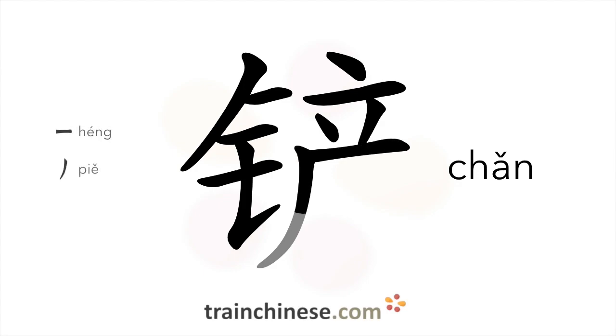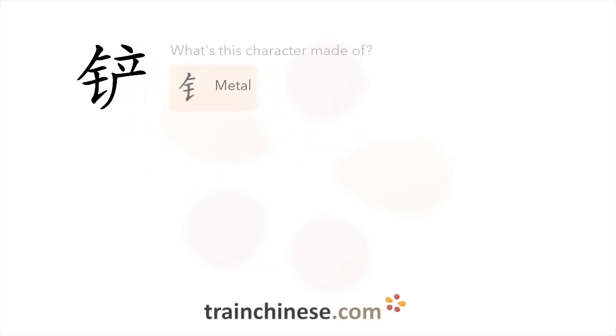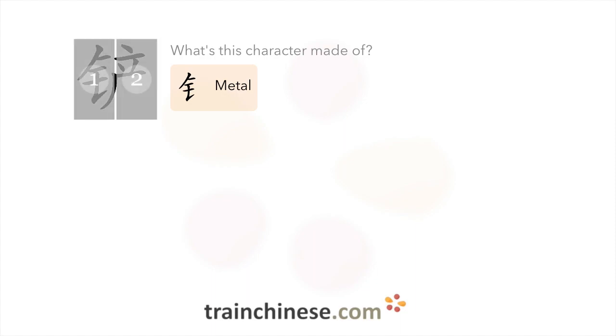铁. Let's look at how this character breaks down. The radical used here is metal: 金.